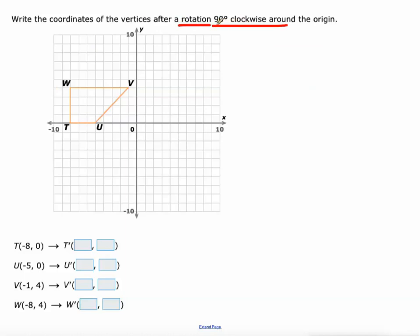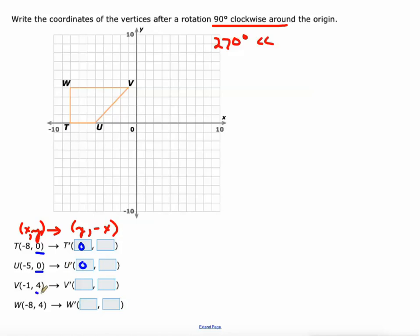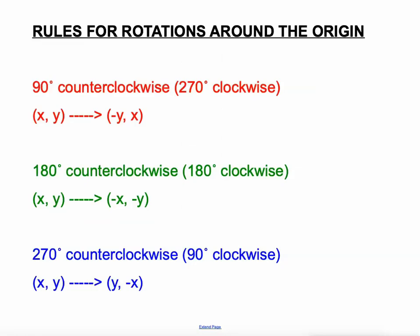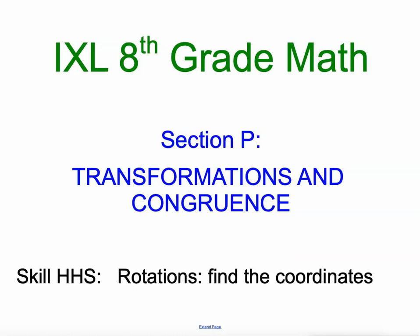Now we're doing a 90 degree clockwise rotation — that's the same as 270 degrees counterclockwise. So the rule is that XY transforms into Y, negative X. These are all on the first slide I showed. Our new X is our old Y: zero, zero, zero, zero, four, four, four, four. Our new Y value is the opposite of our old X — think of it as the opposite, not just a negative sign. So the opposite of negative eight is positive eight, negative five becomes positive five, negative one becomes positive one, negative eight becomes positive eight. These rules will help you on this skill — rotations, finding the coordinates, in IXL's eighth grade math. Good luck.